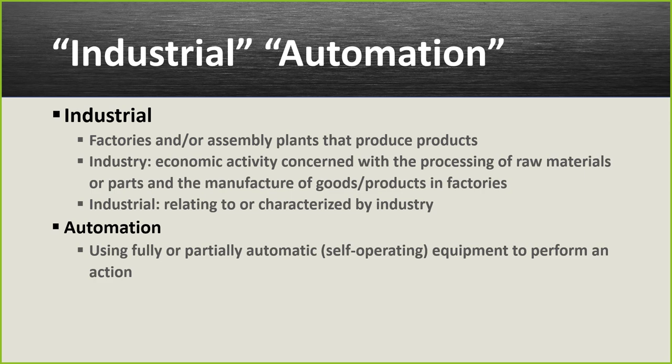Automation is simply using fully or partially automatic equipment to perform an action. Automatic equipment is self-operating. For example, the old way to make ice was to take ice trays out of the freezer and loosen the cubes manually. Now we have automatic ice makers — a bar in the tray rises as it fills with ice, and that sensor tells the ice maker to stop. When the bar drops to a certain level, it starts making ice again. That's automation.